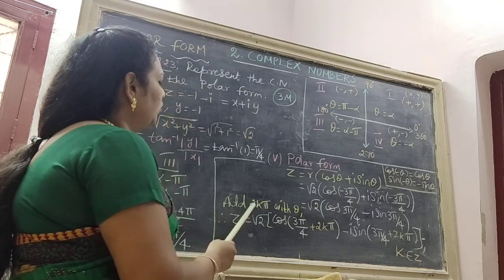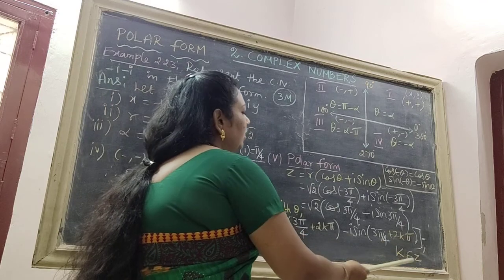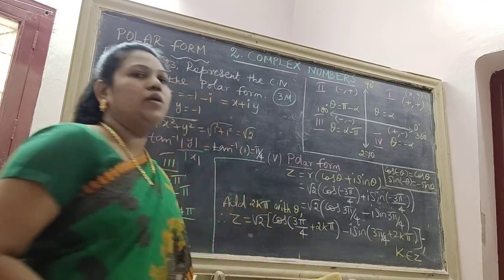And finally, add 2k pi with theta. Therefore, we get the answer where k belongs to capital Z.